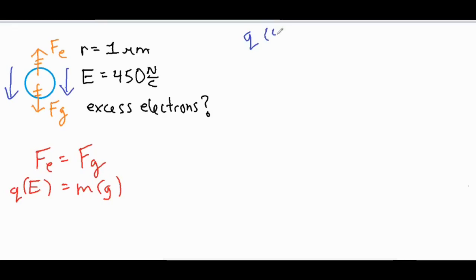If we set up what we currently have, we have q that's unknown, we do have the electric field which is 450 newtons per coulomb, and then we don't have the mass and we know g is 9.8. So our goal at the moment is to find q, and if we can find q then we can do one more extra step to find the amount of excess electrons, which we'll do at the end of the video.